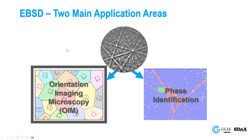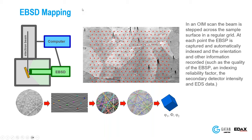Let's go on to orientation imaging microscopy or mapping. In EBSD mapping, we move the beam to a specific point on the crystal, define a scan area, and collect data at each point within the scan grid. At each point, we collect a pattern, deduce the orientation through image analysis, record that orientation, record the pattern if desired, record information on the quality of the pattern, how well we've indexed it, and other data.